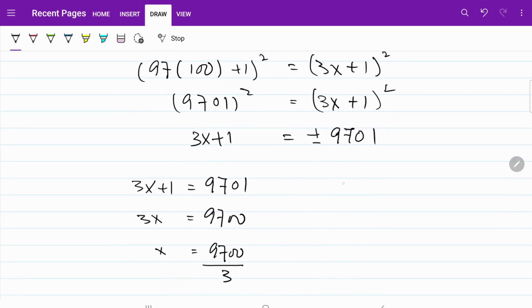If I go with a negative route, I have 3x plus 1 is equal to negative 9,701. So, 3x is equal to negative 9,702. Obviously, then x is equal to this number divided by 3, which is equal to negative 3,234. And those are the two answers that we have for today's question.